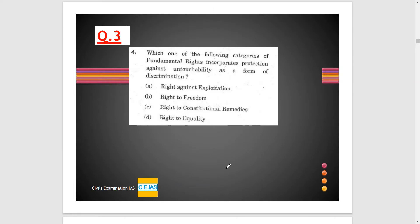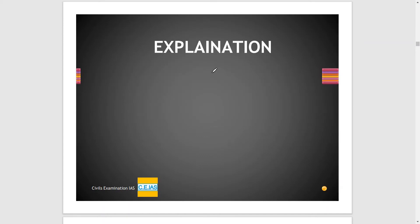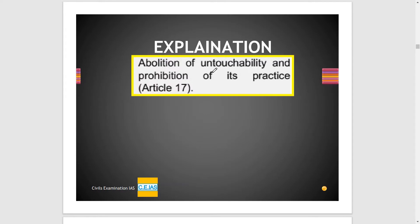The third question asks: which one of the following categories of fundamental rights incorporates protection against untouchability as a form of discrimination? Looking at the options A, B, C, D, you can easily identify that it is talking about untouchability. In the explanation, abolition of untouchability and prohibition of its practices are incorporated in Article 17.